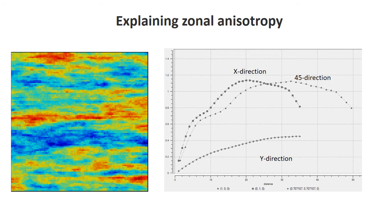Here we have a beautiful case of zonal anisotropy. We have an image on the left showing strong layering, and variograms calculated in various directions on the right. Zonal anisotropy means that if I walk along one line I see mostly red, and along another I see mostly blue — so the variance observed in one direction versus the other is dramatically different. This shows up when you calculate the variogram in the y-direction, which has a much smaller sill than the variogram in the x-direction or any other direction including the 45-degree direction.